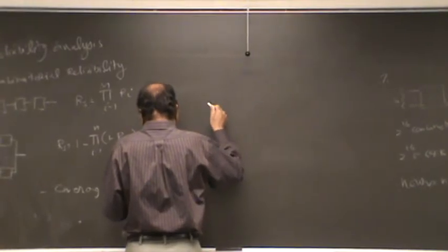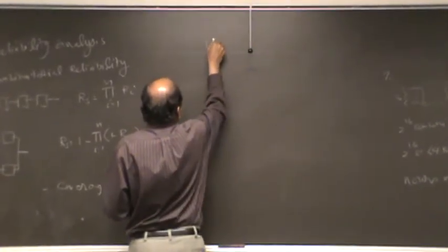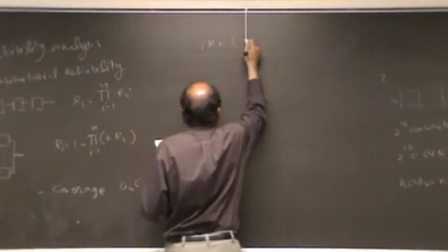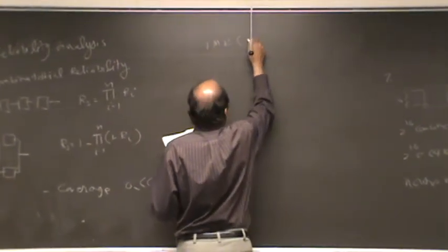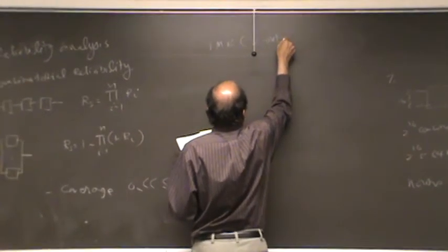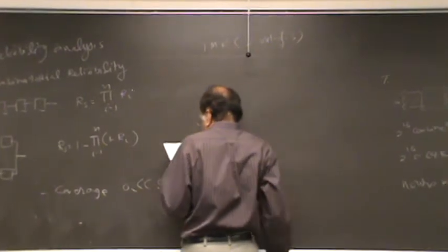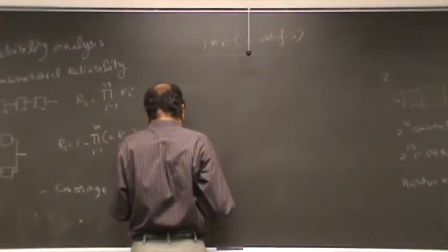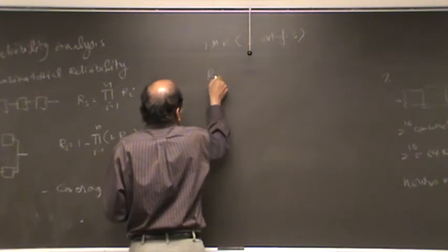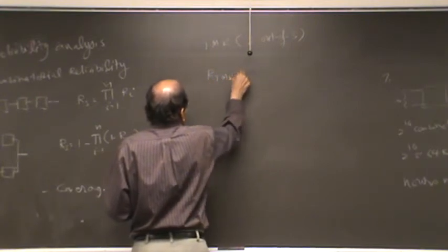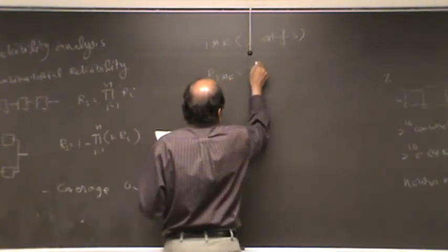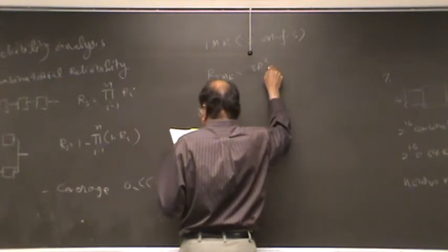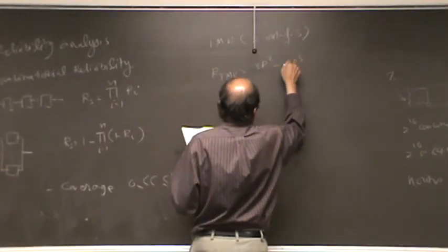We have seen an example of TMR, which is a 2 out of 3. And we found out that reliability of TMR is given by 3r squared minus 2r cubed.